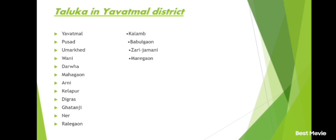And the last district, Yavatmal district and its talukas: Yavatmal, Pusad, Umarkhed, Wani, Darwha, Mahagaon, Arni, Kelapur, Digras, Ghatanji, Ner, Ralegaon, Kalamb, Babulgaon, Zari Jamani, Mahagaon.